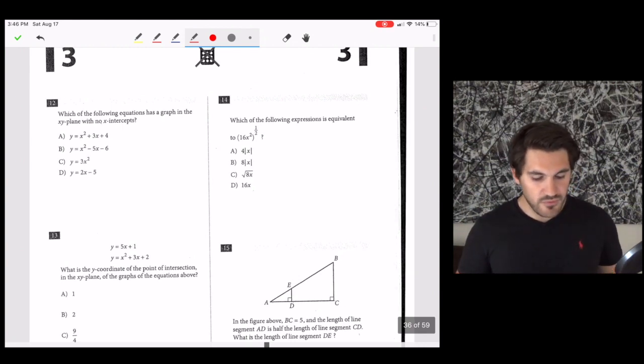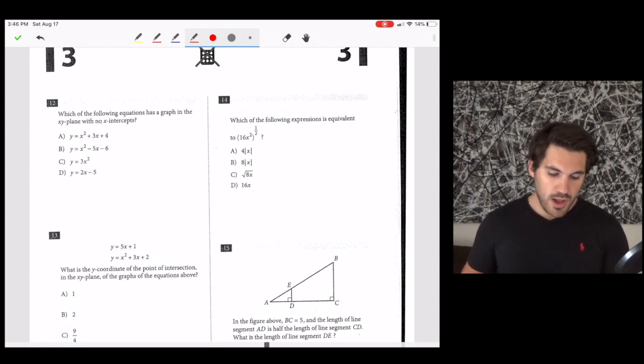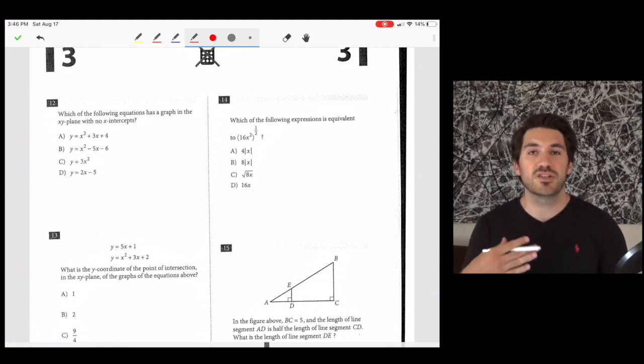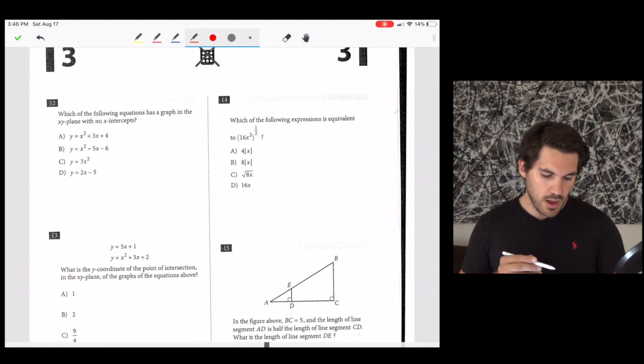Number 12, which of the following equations has a graph in the XY plane with no X-intercepts? In other words, which of these equations has no solutions if you set them equal to 0? What's unfactorable? C clearly can't work because if x is 0, then y is going to be 0. So that has x-intercepts. D is a linear function. It starts at negative 5. Linear functions will basically always have an x-intercept unless it's a horizontal line. But this isn't the case here because the slope isn't 0. So now we're left with A and B.